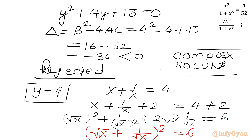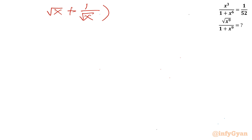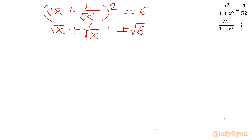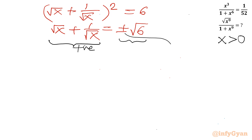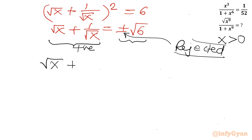Taking square roots of both sides: √x + 1/√x equals ±√6. Since x is positive, the left-hand side is always positive, so the right-hand side cannot be negative. The negative value is rejected. The accepted solution is √x + 1/√x equal to √6.